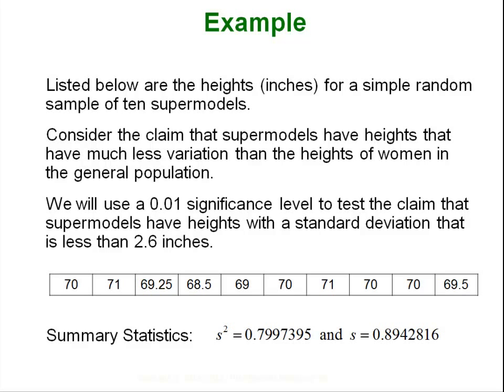Let's look at an example. Here we have below a list of heights from a simple random sample of 10 supermodels. Now we are going to test the claim that supermodels have heights with much less variation than heights of just the general population of women. We are going to use an alpha level of 0.01 to test this claim and we need to know what the standard deviation of heights of women are in the general population and that ends up being 2.6 inches. I've provided the summary statistics down below. These are of course of your sample. That's why they are s's and not sigma's.